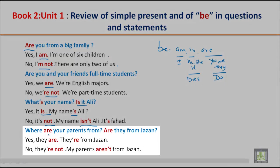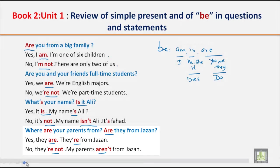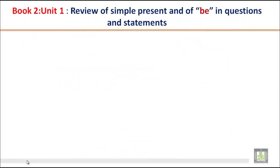Now, where are your parents from? Are they from Jisan? Yes, they are. They are from Jisan. No, they are not. My parents aren't from Jisan. So hope you find this simple. Let's look at more examples.